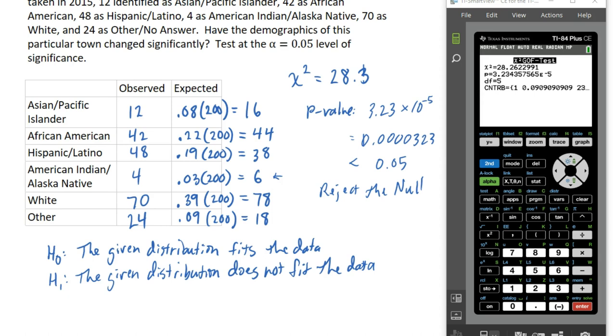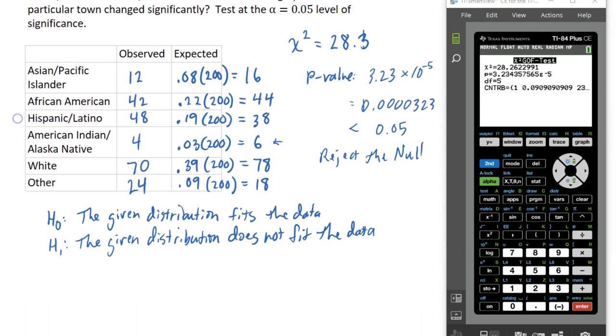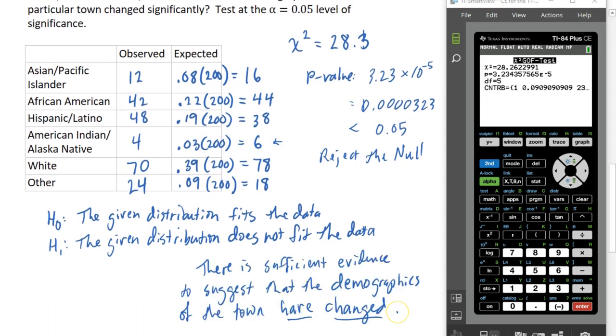Back to my result. My result was rejecting the null, which means we have evidence to suggest that the distribution no longer fits, so we should probably update our expected percentages that pertain to each of these categories. Our conclusion would be there is sufficient evidence to suggest that the demographics of the town have changed.